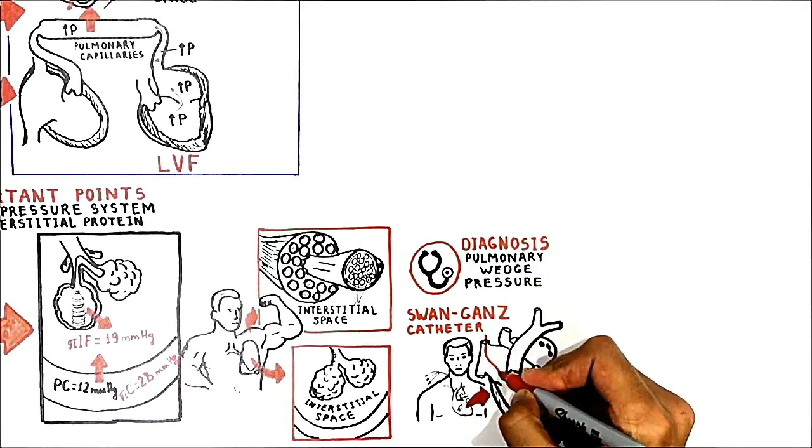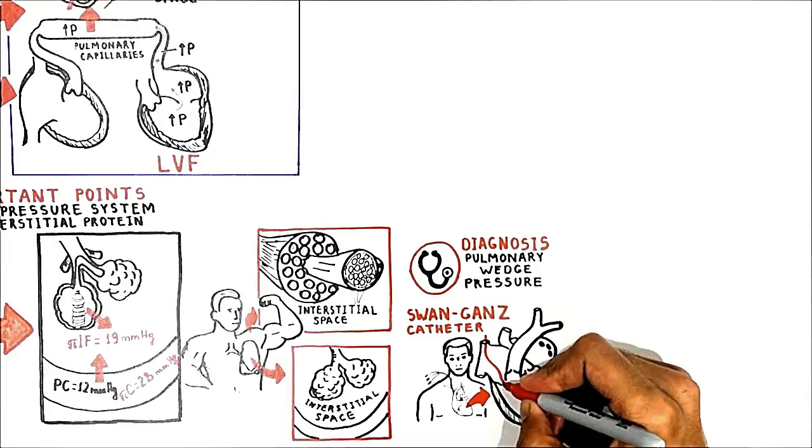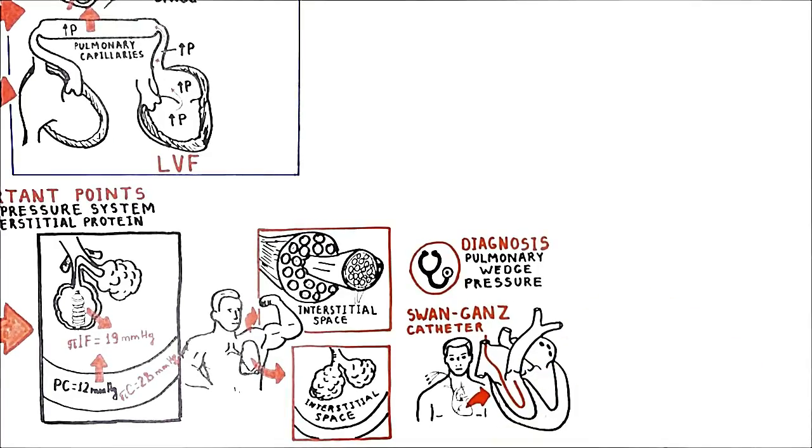Then advancing the catheter into the right atrium, right ventricle, pulmonary artery, and then into a branch of the pulmonary artery.